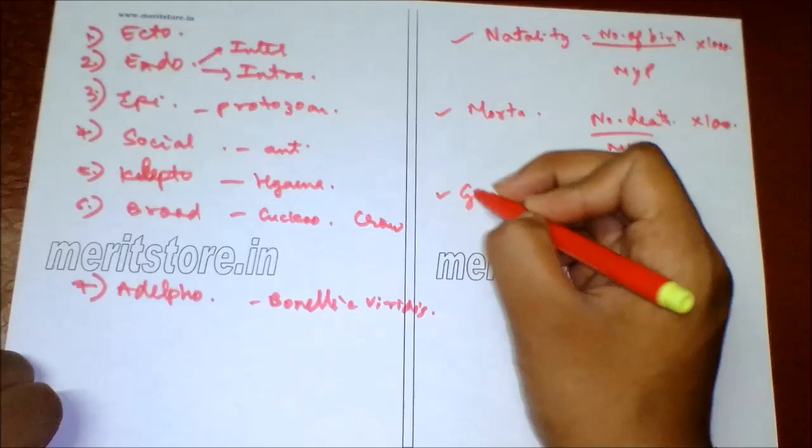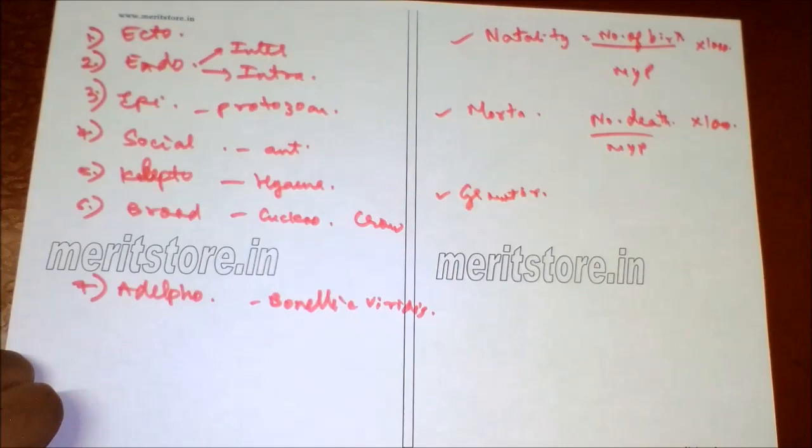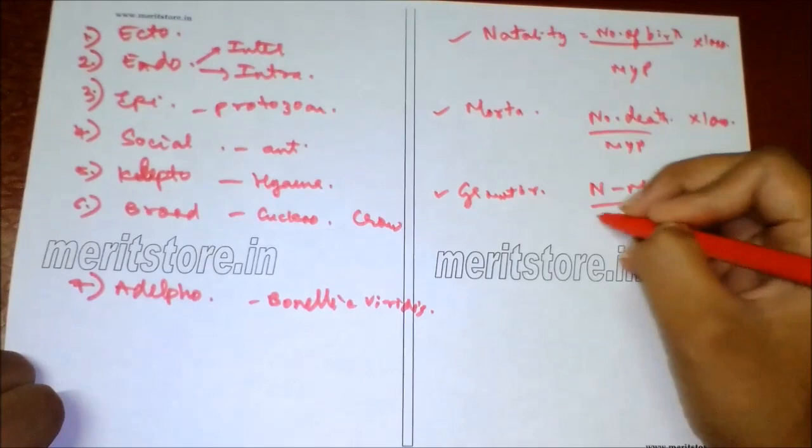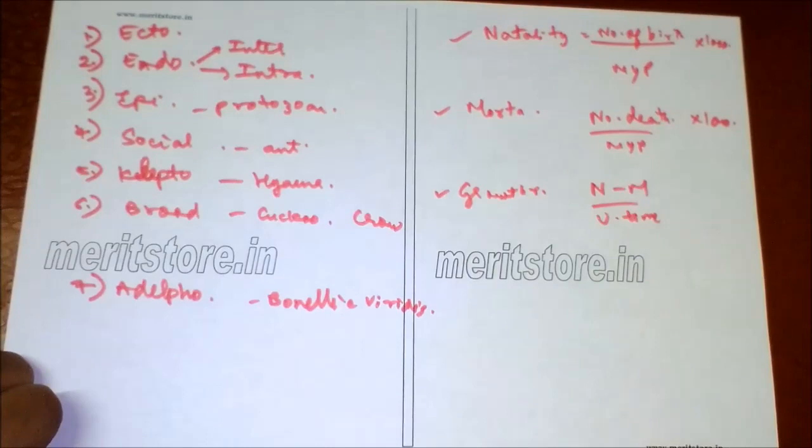Then there is growth rate, the increase in population due to actual number of individuals added to the population, which is natality minus mortality per unit time. Then there is density of the population, which is the total number of individuals in a population per unit area.